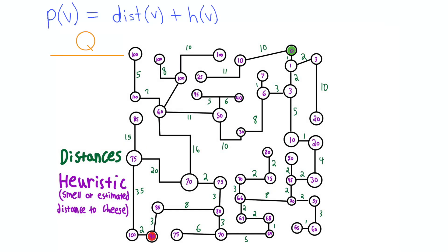So we'll put the red starting node on our queue and give it a priority of 0 plus the heuristic value, which is the estimated distance to the cheese. We then pop this node off the queue and add on its children.